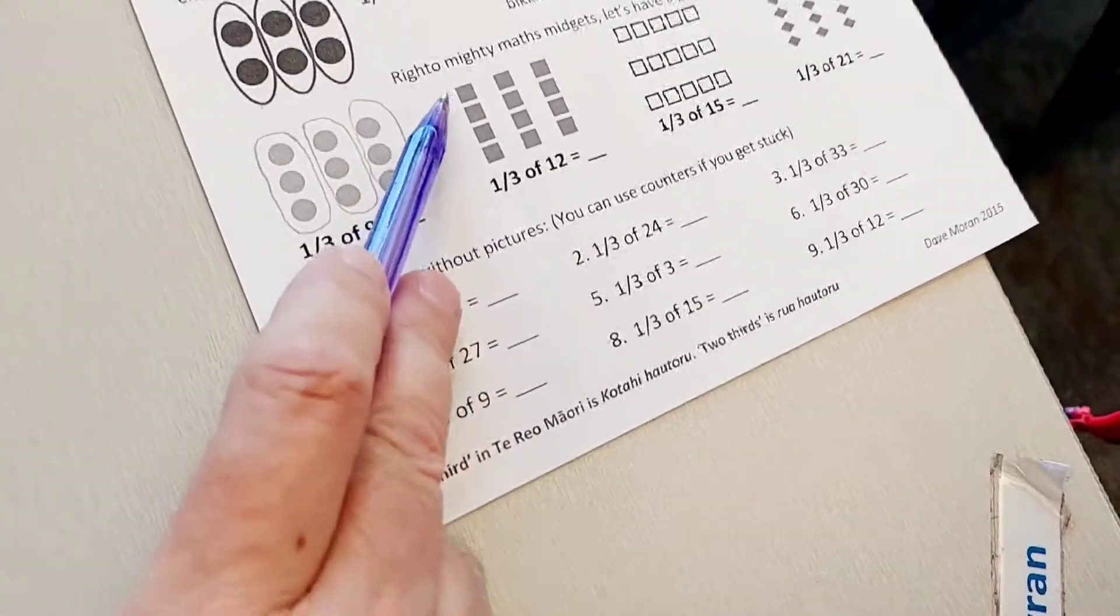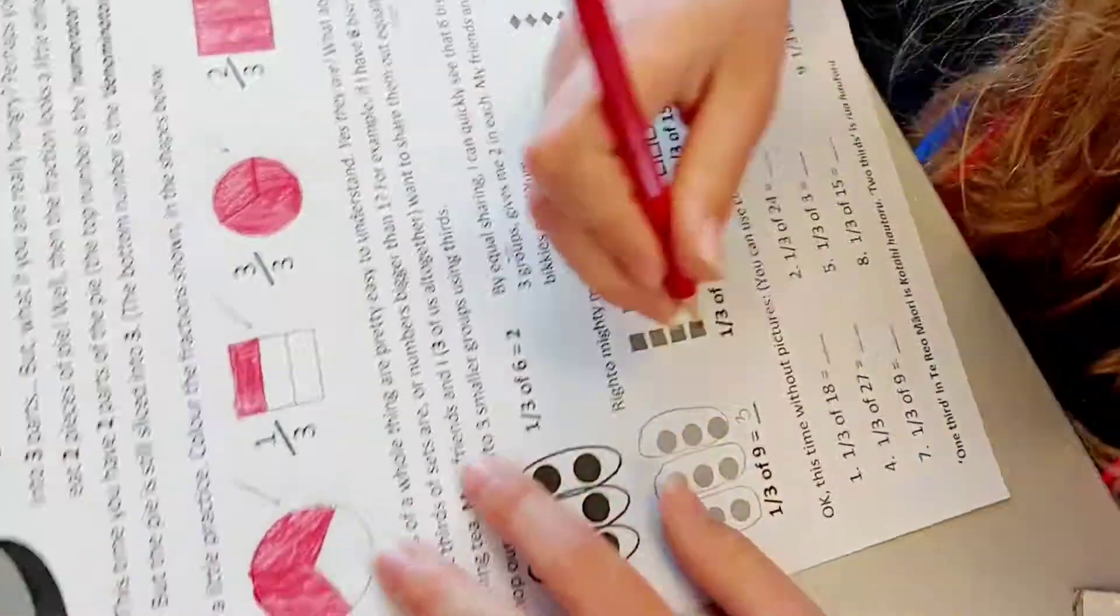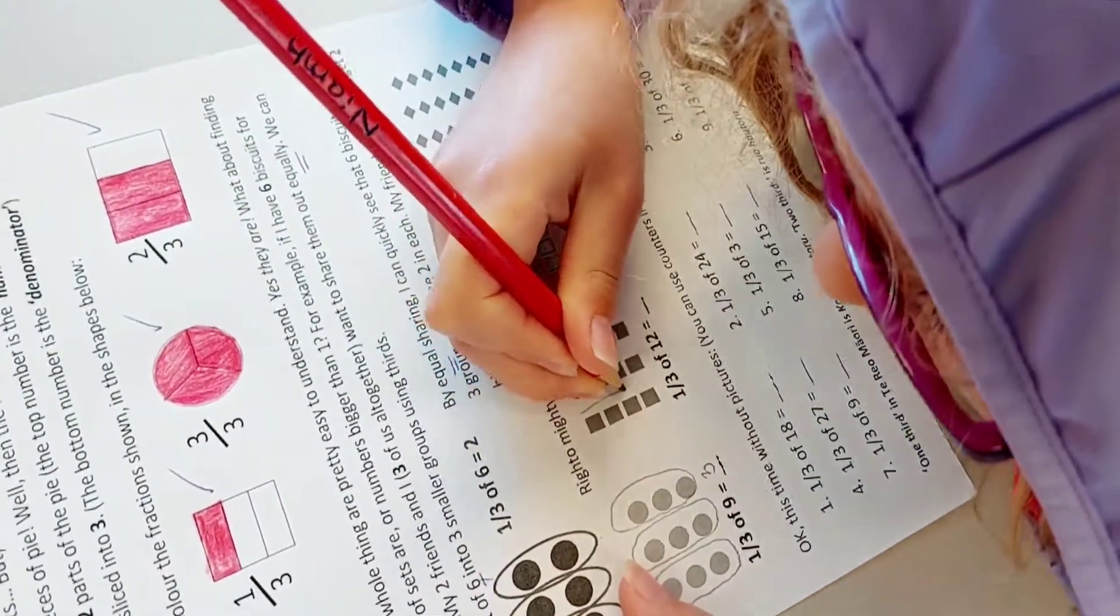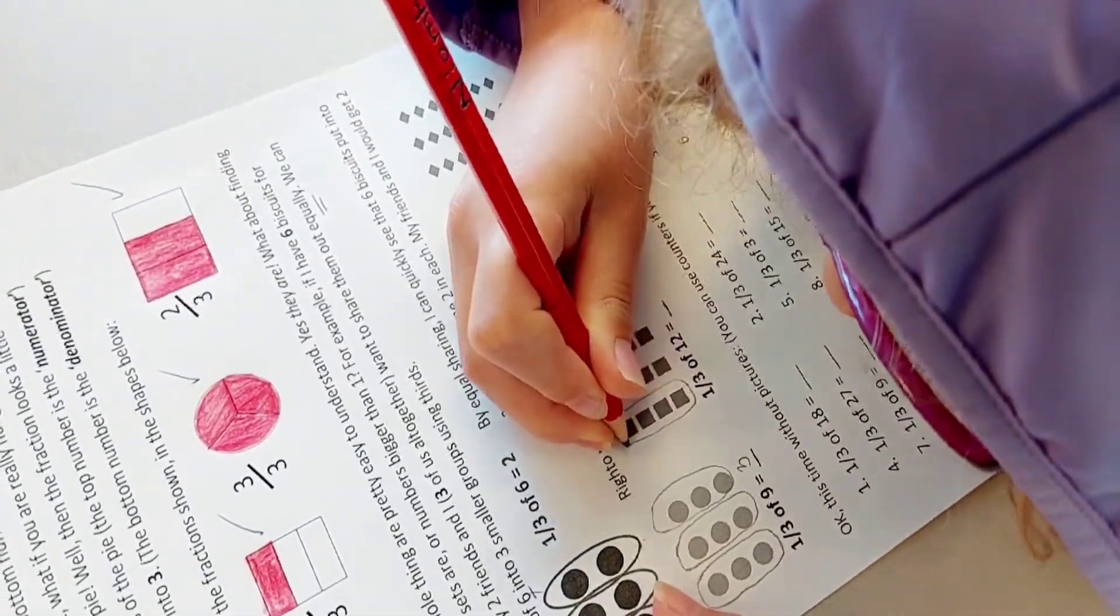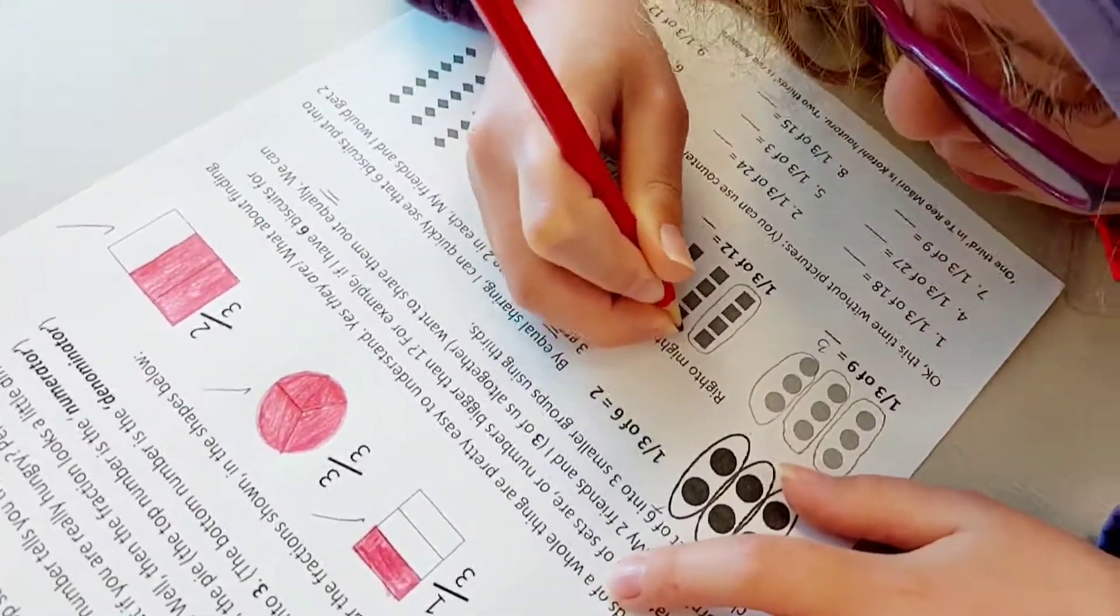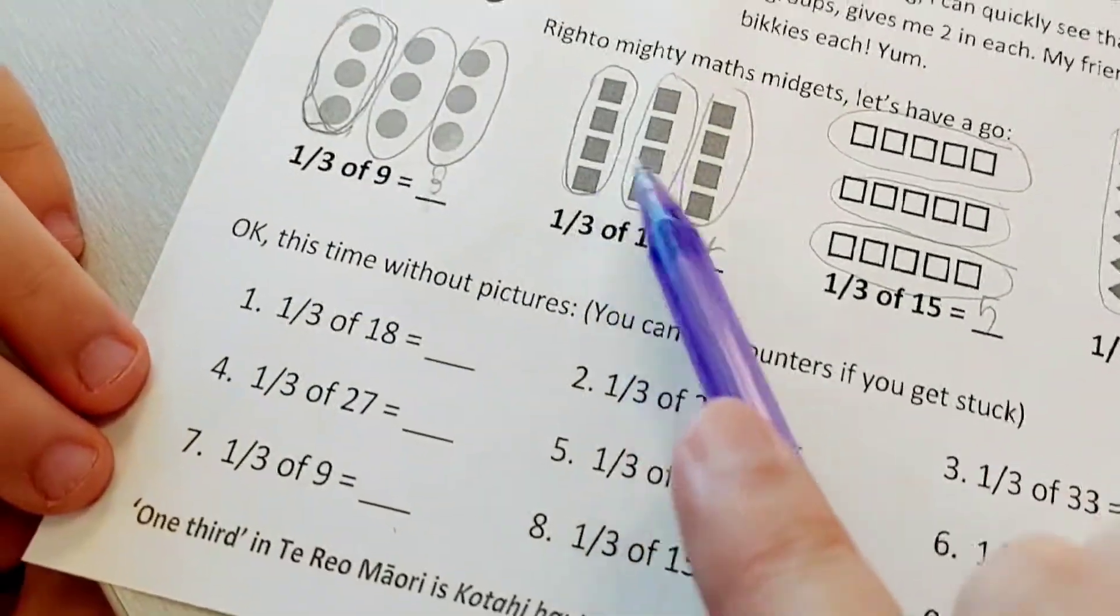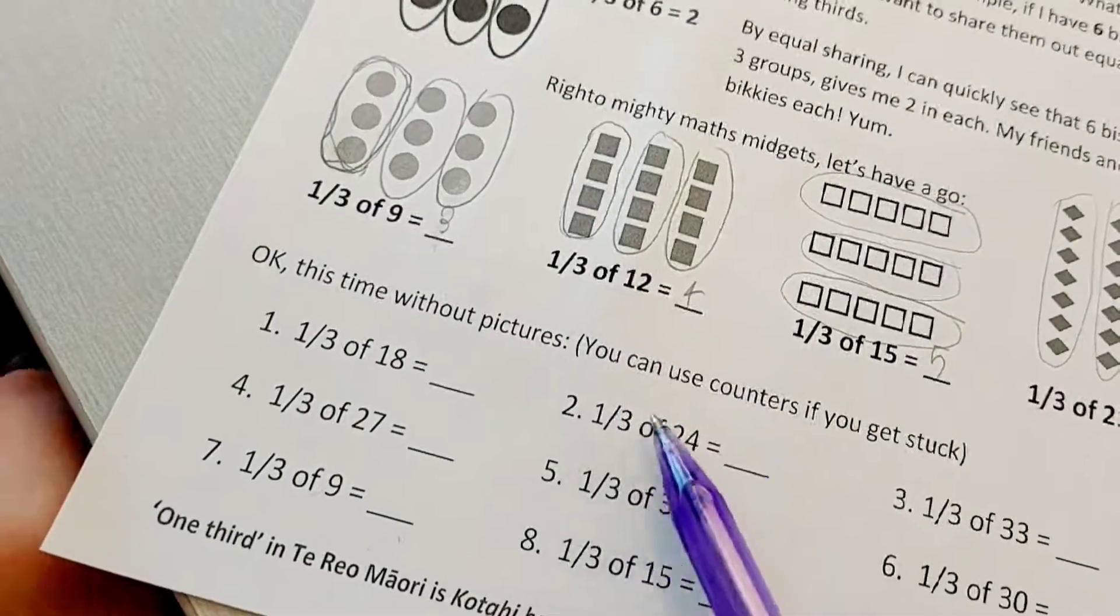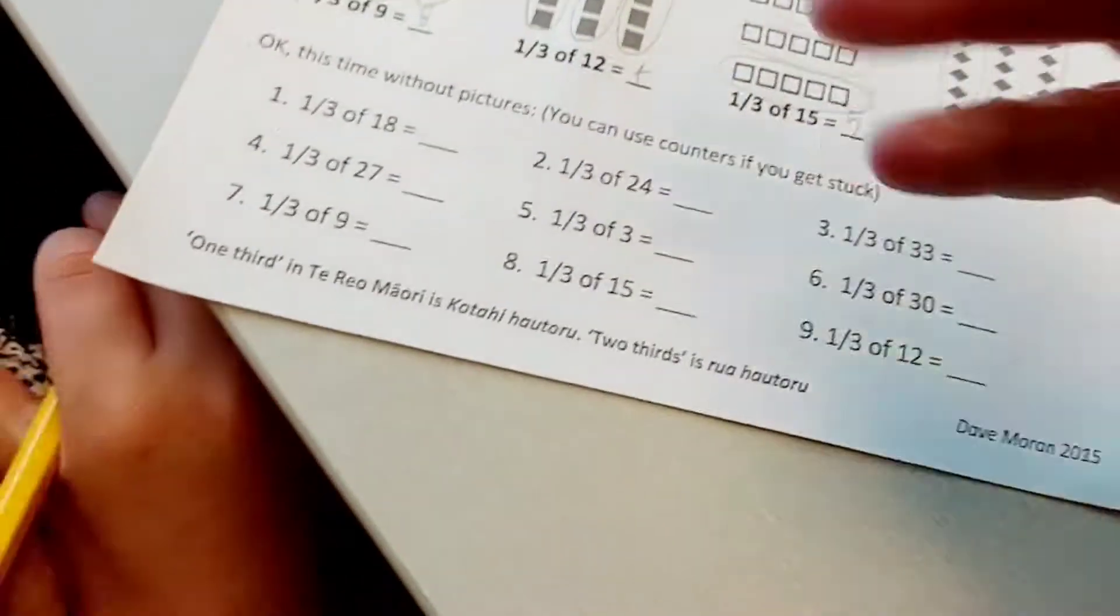Let's try this next one. You can see that you've got all these boxes here, these squares. So see if you can make those into three groups. Done. How much is in there? You can see you've got three groups and you've counted how many are in each of those groups. And there's four. Perfect.